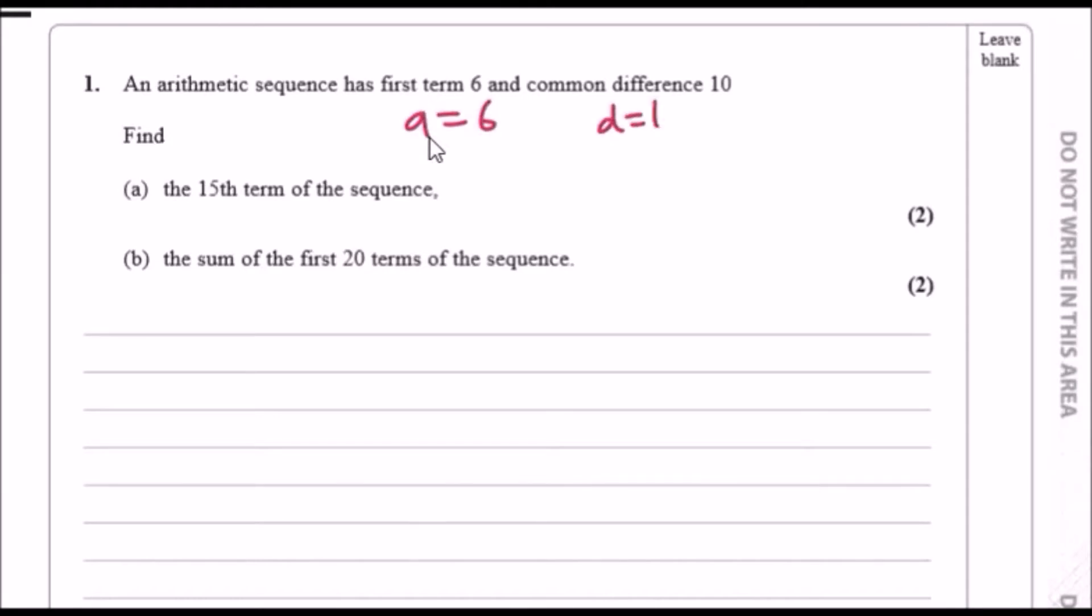Now find the 15th term of the sequence and the sum of the first 20 terms. We can do this both right now. The general equation for defining any term is just the standard a plus (n-1)d where a is first term, d is difference, and n is the position. The sum would be Sn which equals n over 2 times 2 times the first term plus (n-1)d. That's really it, this is easy for marks.